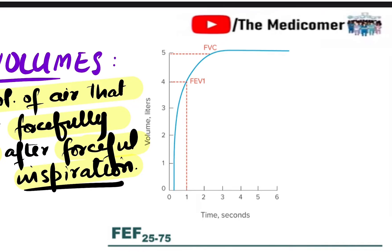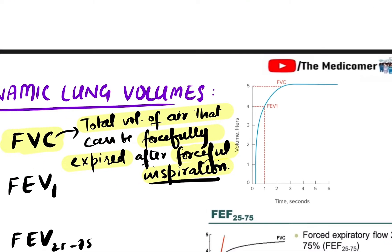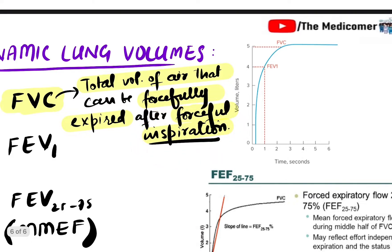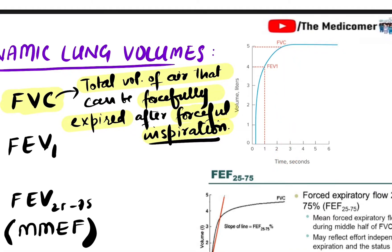The forced vital capacity has a value of almost five liters. If a person is asked to perform these same steps — first inspire forcefully, then expire forcefully — the maximum air that can be expelled is the forced vital capacity. Let's say the person reaches the forced vital capacity in three seconds.